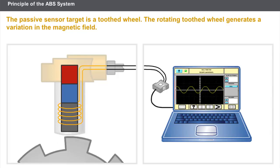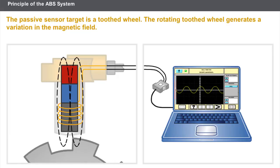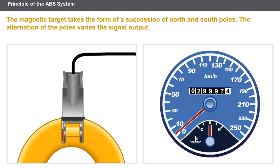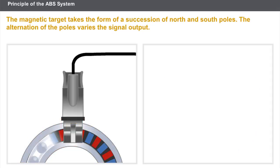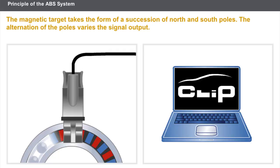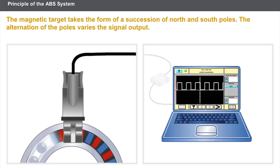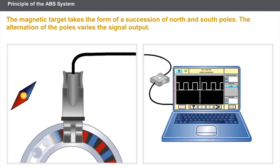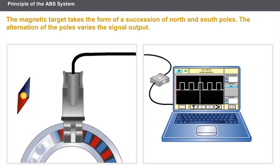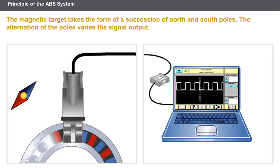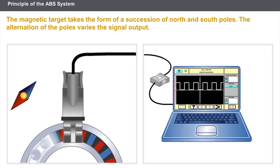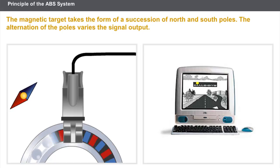The signal quality depends on the speed of rotation of the wheels. The active sensor is supplied by the computer and measures the speed of rotation from 0 km/h. The sensor is fixed opposite the target, which is sometimes built into the wheel bearing. The magnetic target takes the form of a succession of north and south poles. The alternation of the poles varies the signal output, which takes the form of a square pulse signal of variable frequency. When replacing a wheel bearing, comply with the recommendations in the technical documentation.